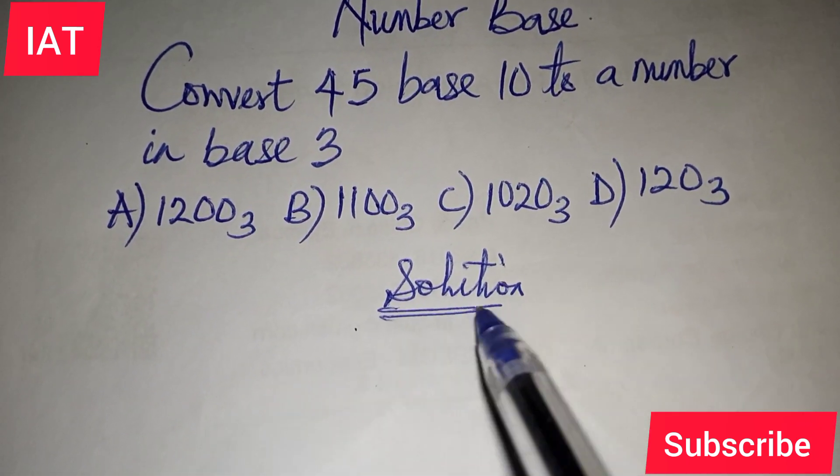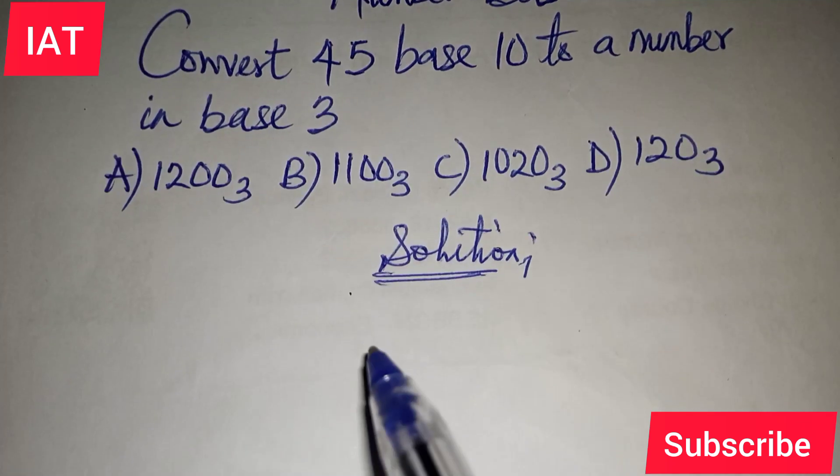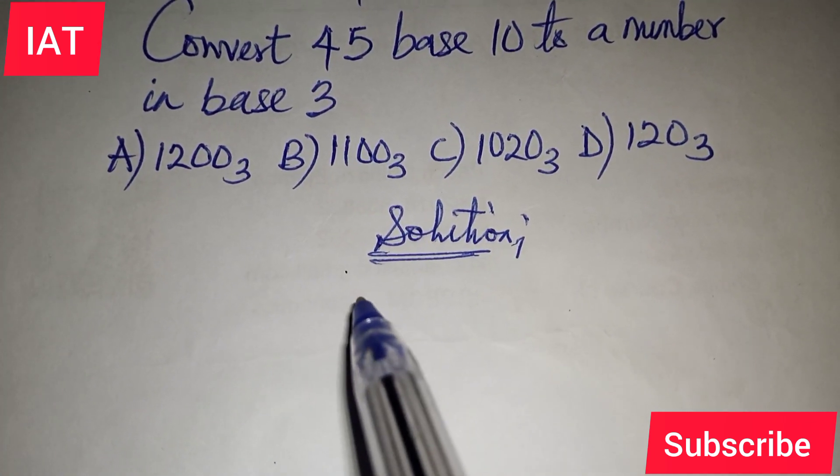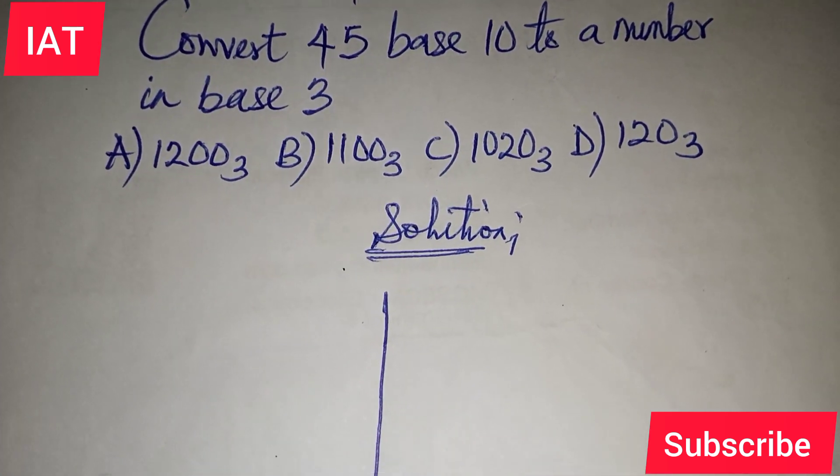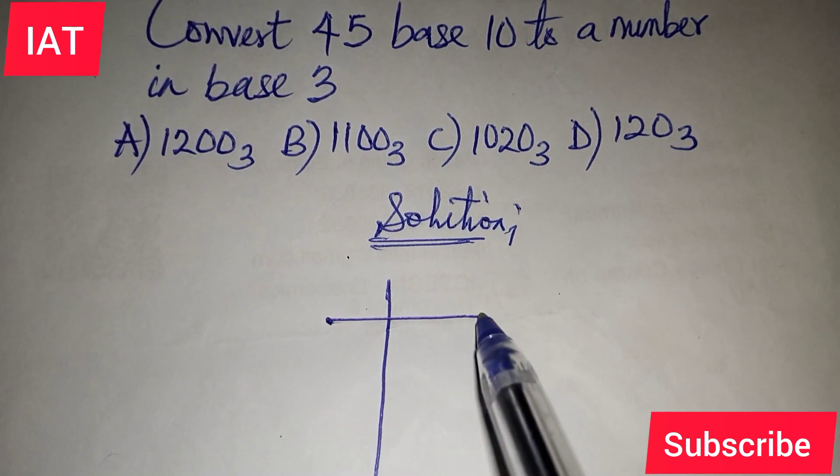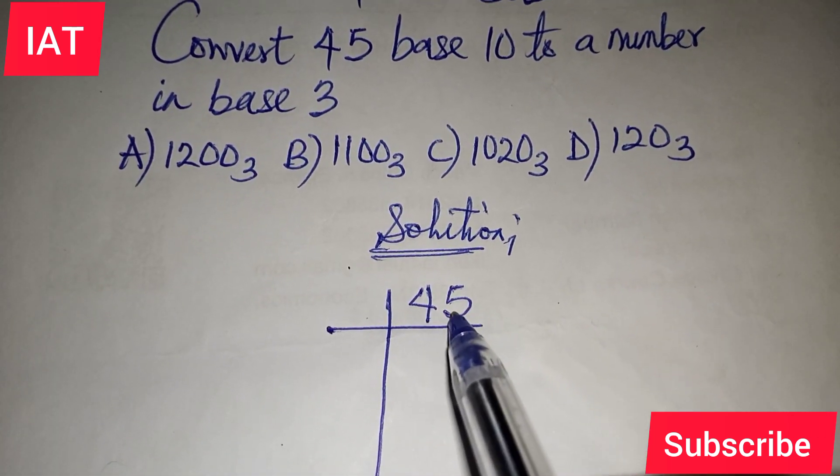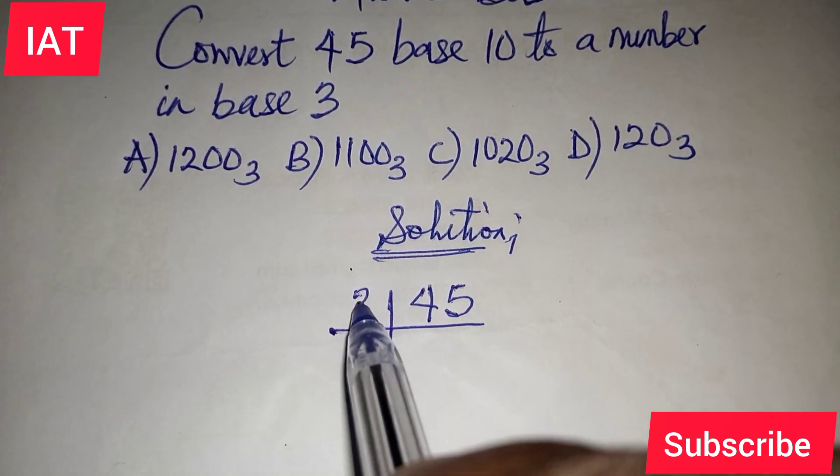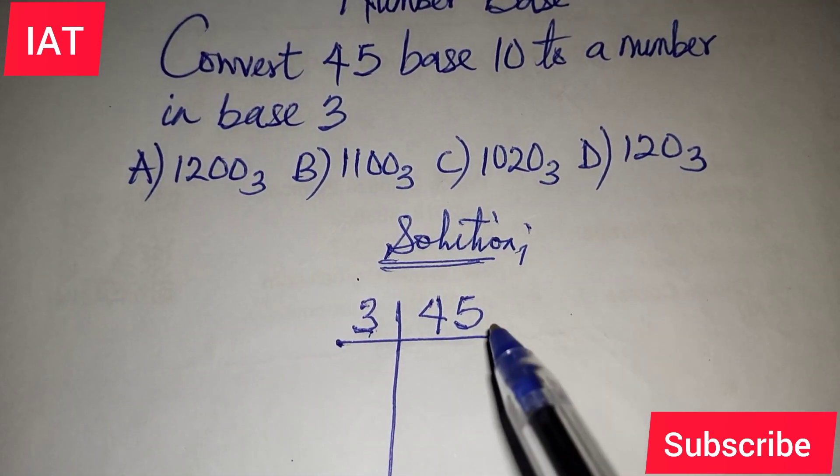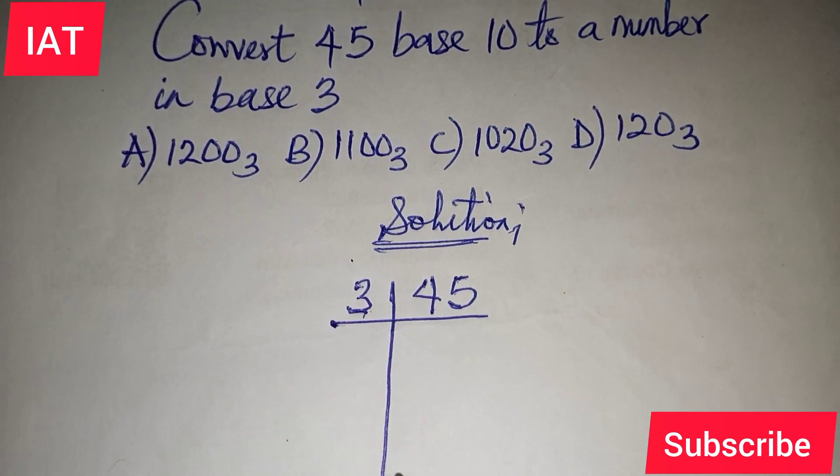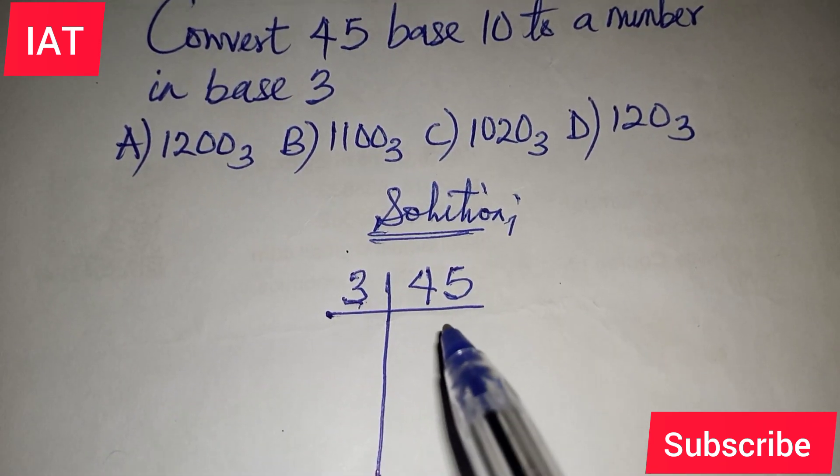So the first thing we need to do, or one of the methods I want to introduce that you may already be aware of, is this. I just have something like this where I can fix the 45 that we're meant to convert to a number base 3. So we have to fix the 3 here. Of course, this is in base 10 already. So we want to use this method or this format to get the answer.